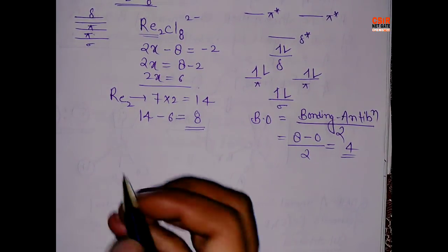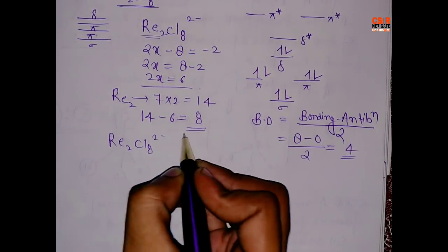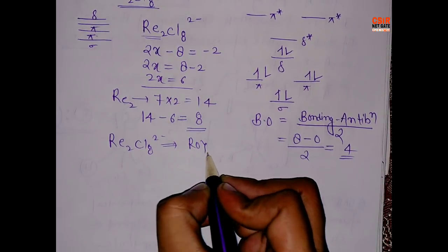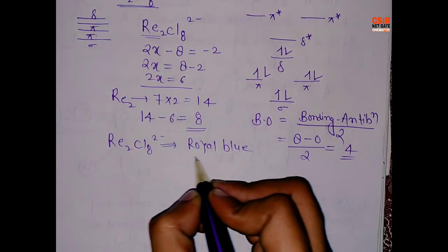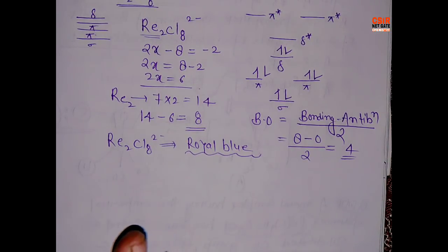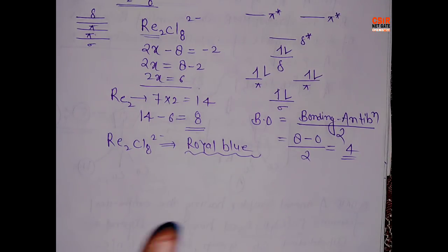By the way, the color of Re₂Cl₈²⁻ is royal blue — just keep that in mind. The characteristics and properties, like which conformation is eclipsed and which is staggered, I will cover in a dedicated video. In this video we are limited to determination of the delta bond.